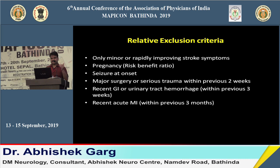Relative exclusion criteria for thrombolysis — a trained physician may still proceed — include: rapidly improving stroke symptoms, pregnancy, seizure at onset, major surgery in the last two weeks, or acute MI within the last three months. These patients should also generally be excluded from IV thrombolysis.